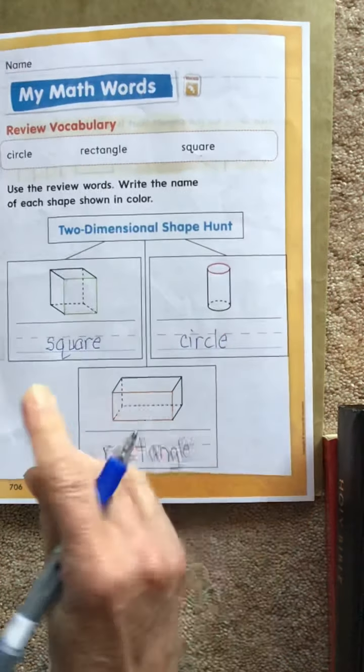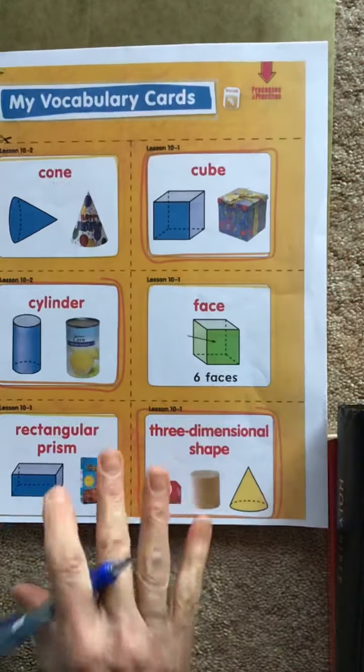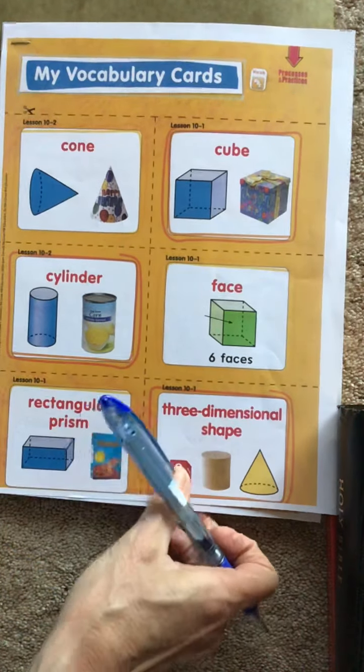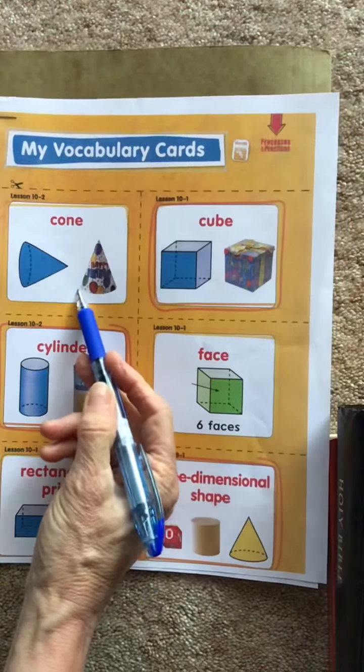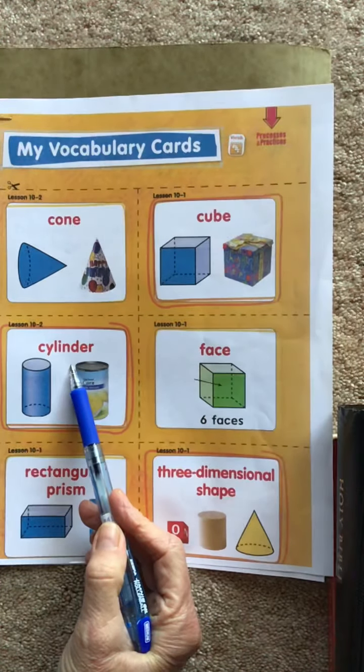Okay, so that's your Monday Math for the Am I Ready? Now, let's read through your vocabulary cards. Okay, we have a cone. We have a cube. We have a cylinder.